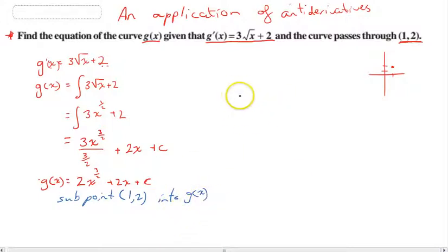So all we need to do is sub in (1, 2) into g(x). Okay, so let's do that. We'll do that up here. So the point (1, 2), so 2 was the y value. 2 = 2(1)^(3/2) + 2(1) + c.